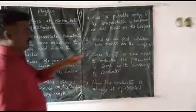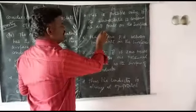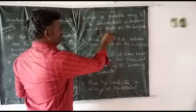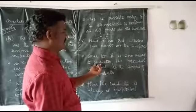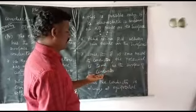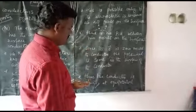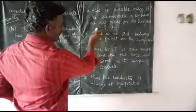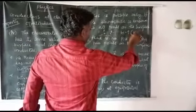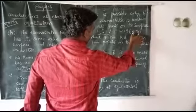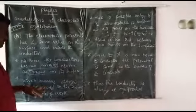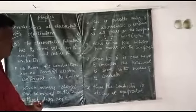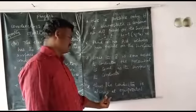When the potential difference is zero, no work is done in moving a charge from one point to another on the surface. The work done W = Q(V_B − V_A). If V_A and V_B are equal, then W = 0. Since all points on the surface of the conductor have the same potential, no work is done in moving a charge. Since the electric field is zero inside the conductor, the potential inside is also the same as on the surface. Therefore the conductor is always an equipotential surface, and charges can be moved on the surface without doing any work.